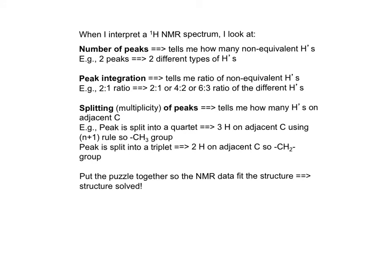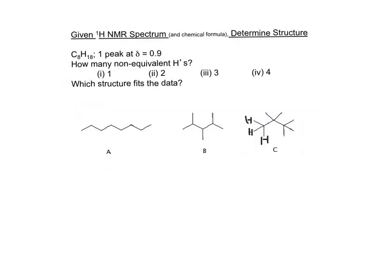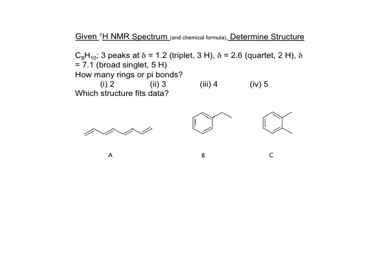Given an NMR spectrum, I can determine the structure by looking at the number of peaks, the integration, the splitting — it's like solving a puzzle. For C8H18 with only one peak observed, stop the video and figure out which compound best fits that NMR spectrum. The answer is C. For a proton NMR spectrum of C8H10 showing three peaks with a given ratio of non-equivalent protons and splitting, first note that C8H10 shows an HDI of four, meaning there are four pi bonds, four rings, or a combination. The structure that best fits the data is B.